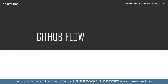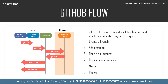GitHub flow is a lightweight branch-based workflow built around core git commands used by teams around the globe. The GitHub flow has six steps, each with distinct benefits. The first step is to create a branch — topic branches created from the canonical deployment branch, usually the main master branch, allow teams to contribute to many parallel efforts. Short-lived topic branches keep teams focused and result in quick shifts.